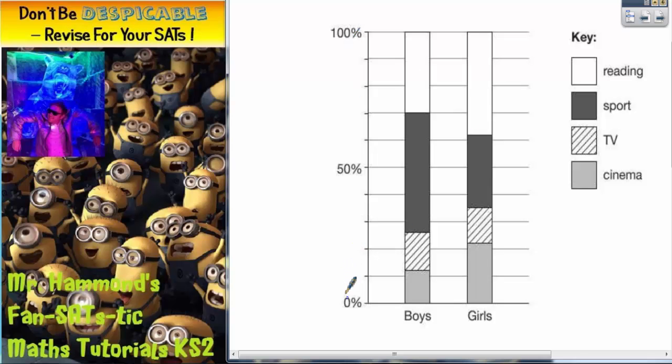Before we do anything else, it may help us to write extra percentages on the scale. This may come in handy later. So, if we go from 0% to 50% across 5 gaps, this must mean we're going up 10% each gap because 50 divided by 5 equals 10%.